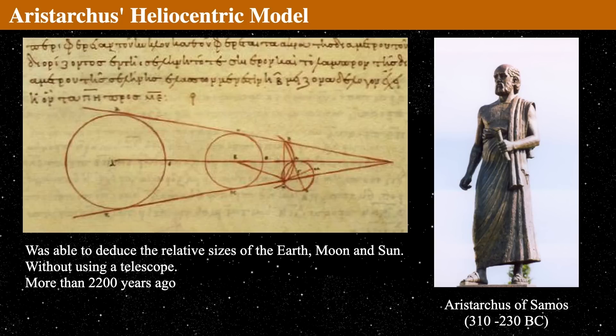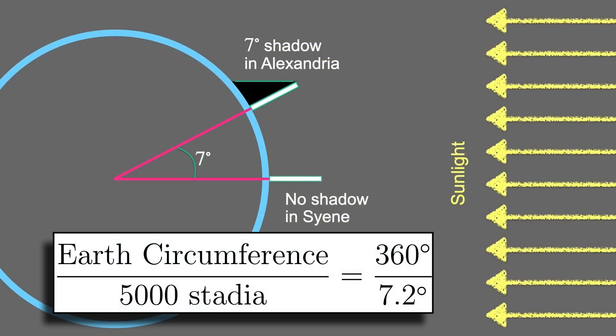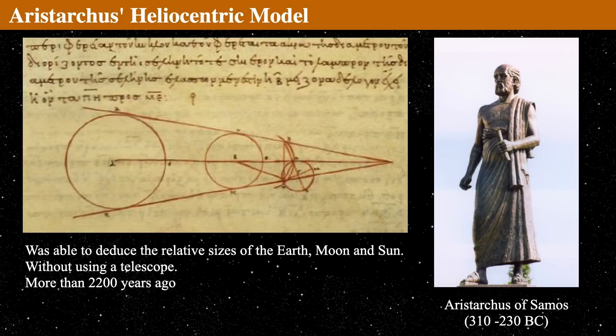Remember, his contemporary actually knew the size of the earth. So we can actually use that and plug that in later in order to get the actual sizes of the sun and the moon. How did he do it?